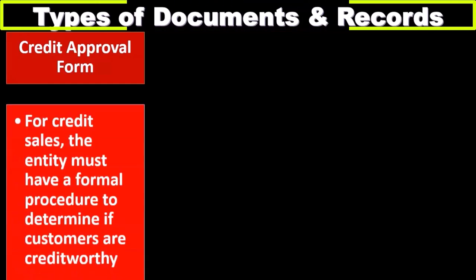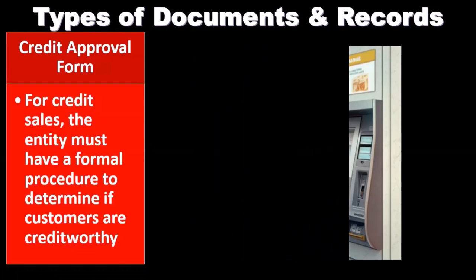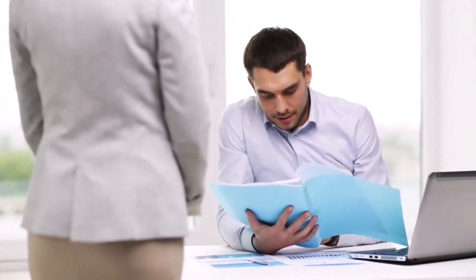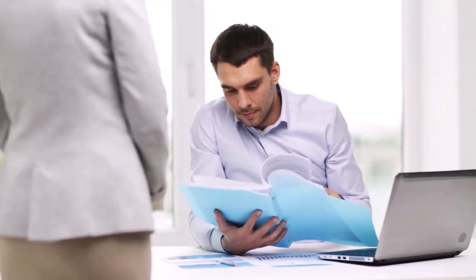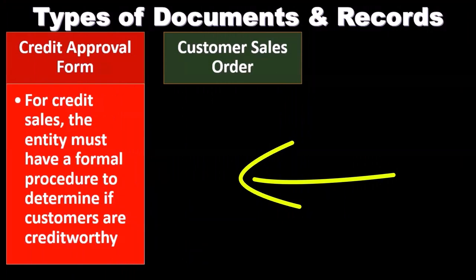Types of documents and records. We've got the credit approval form for credit sales. If we have a sale on credit and haven't received cash up front, the entity must have a formal process to determine if customers are credit worthy. Depending on the type of industry, the sales process may have a high degree of non-payment. If there's a credit approval process, we want to make sure it's in place so there's more likelihood that payment will be received when sales are made on account.